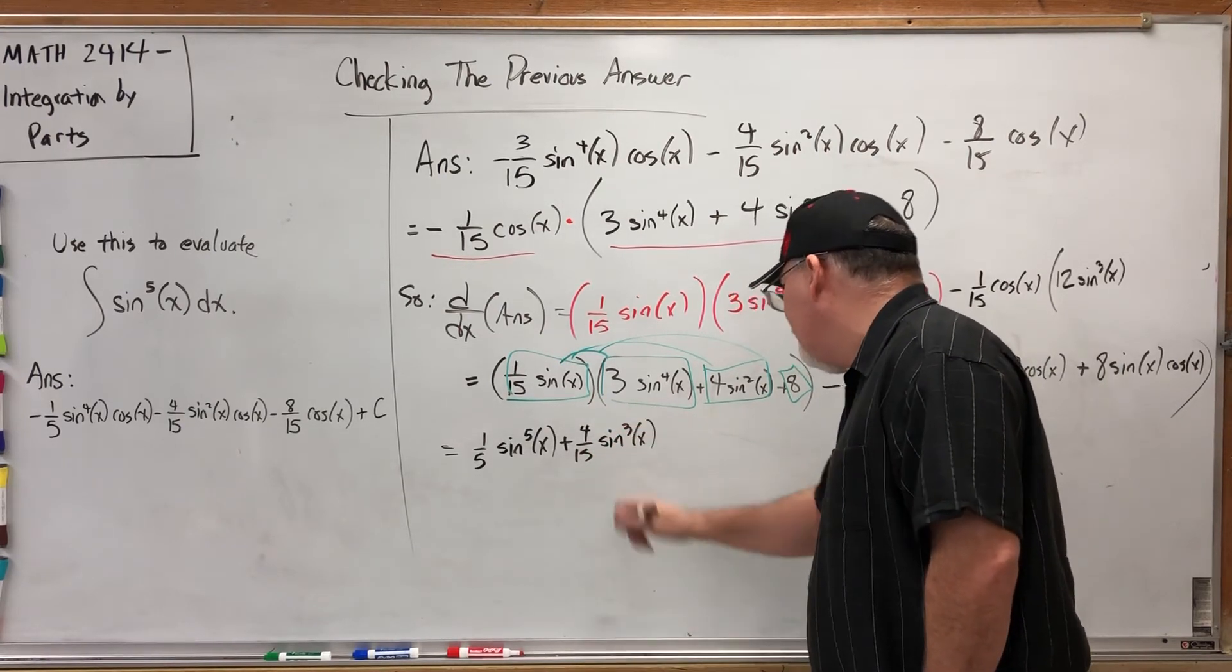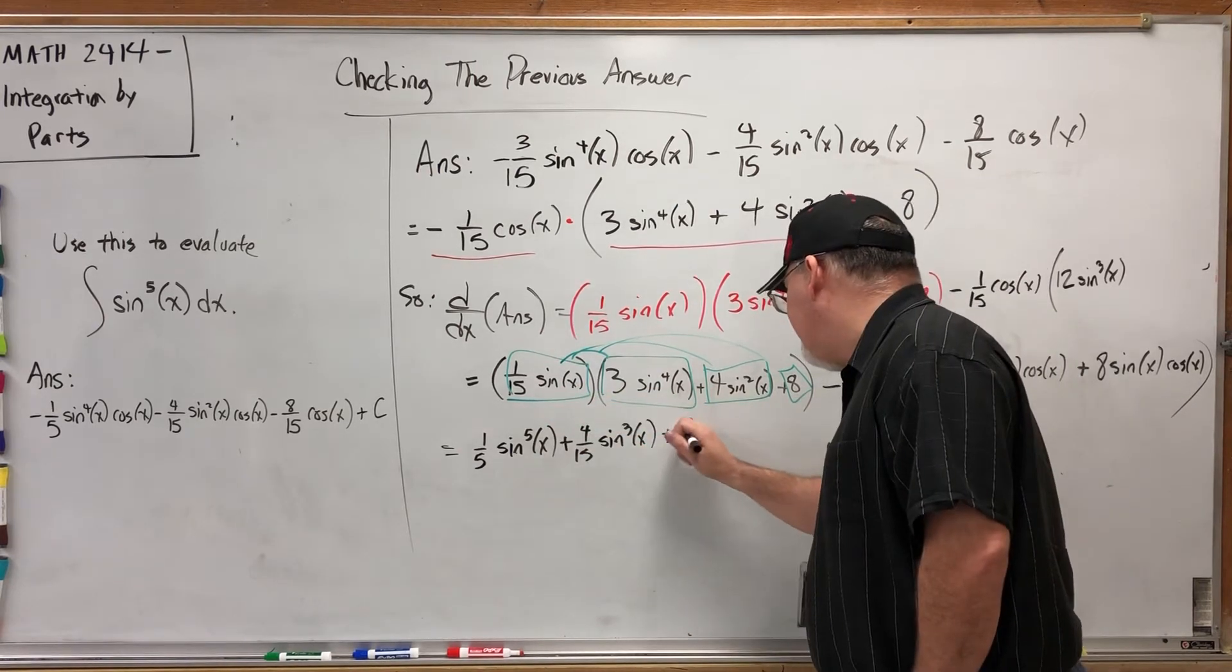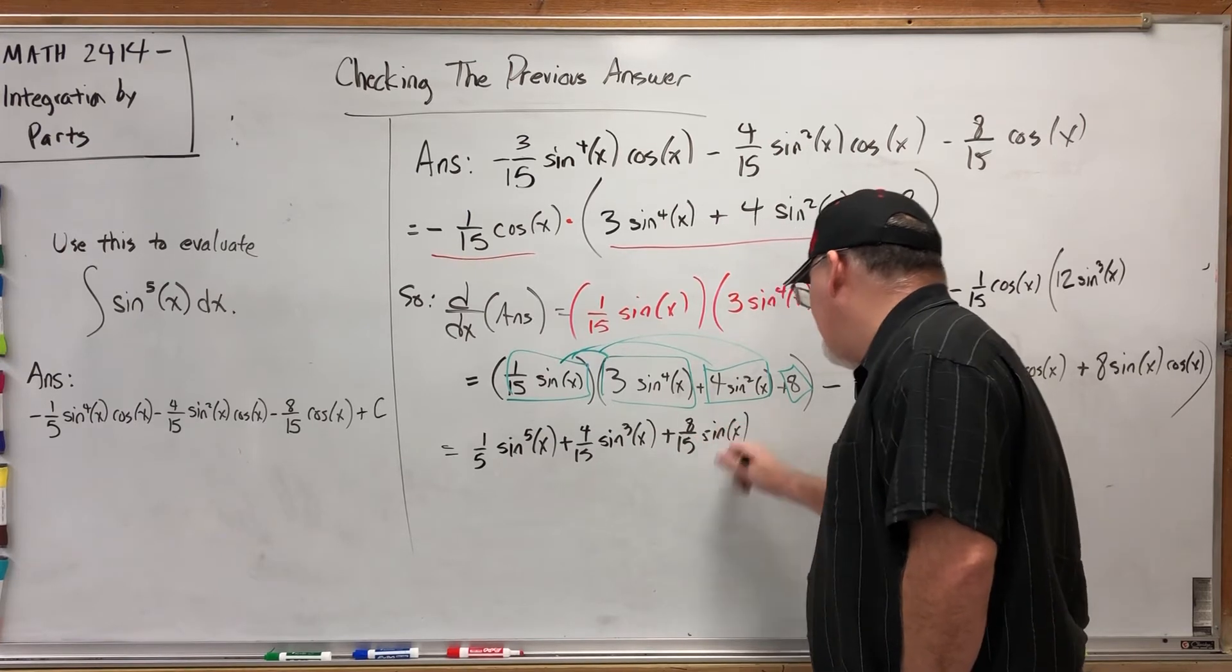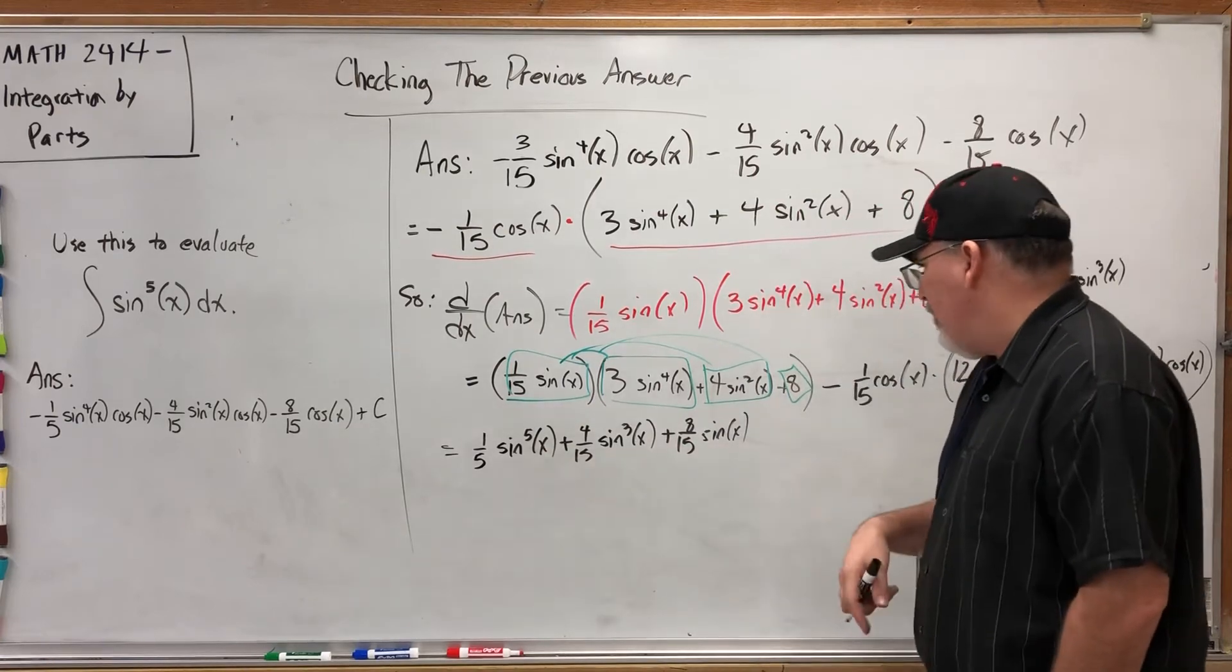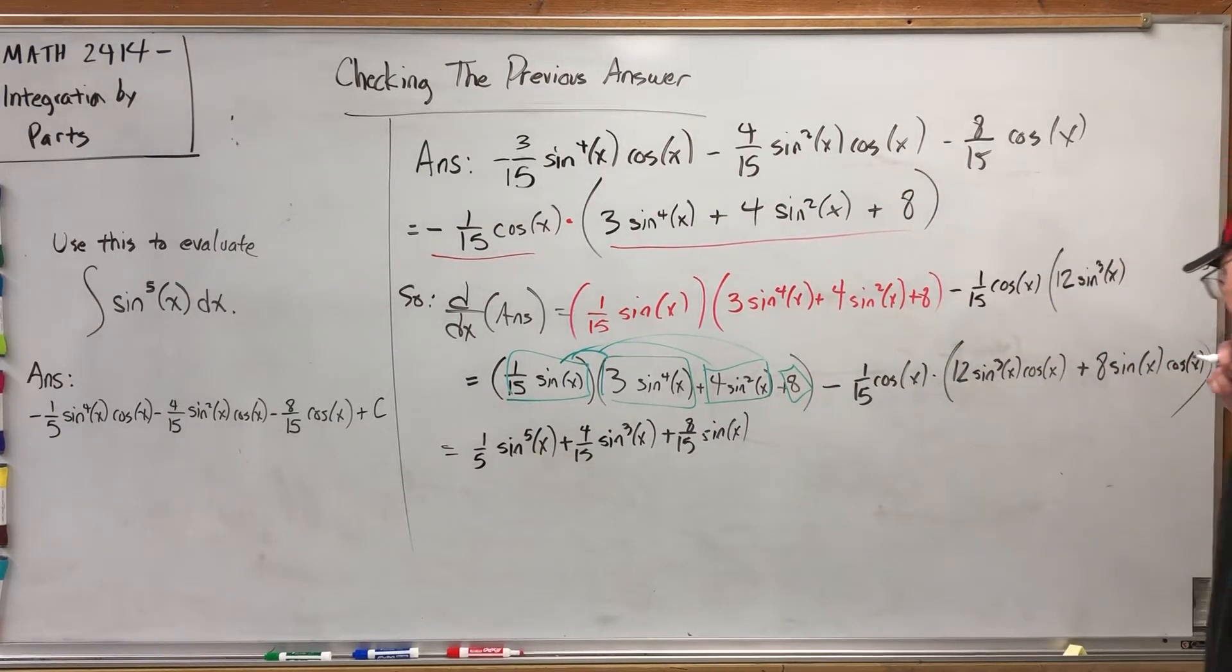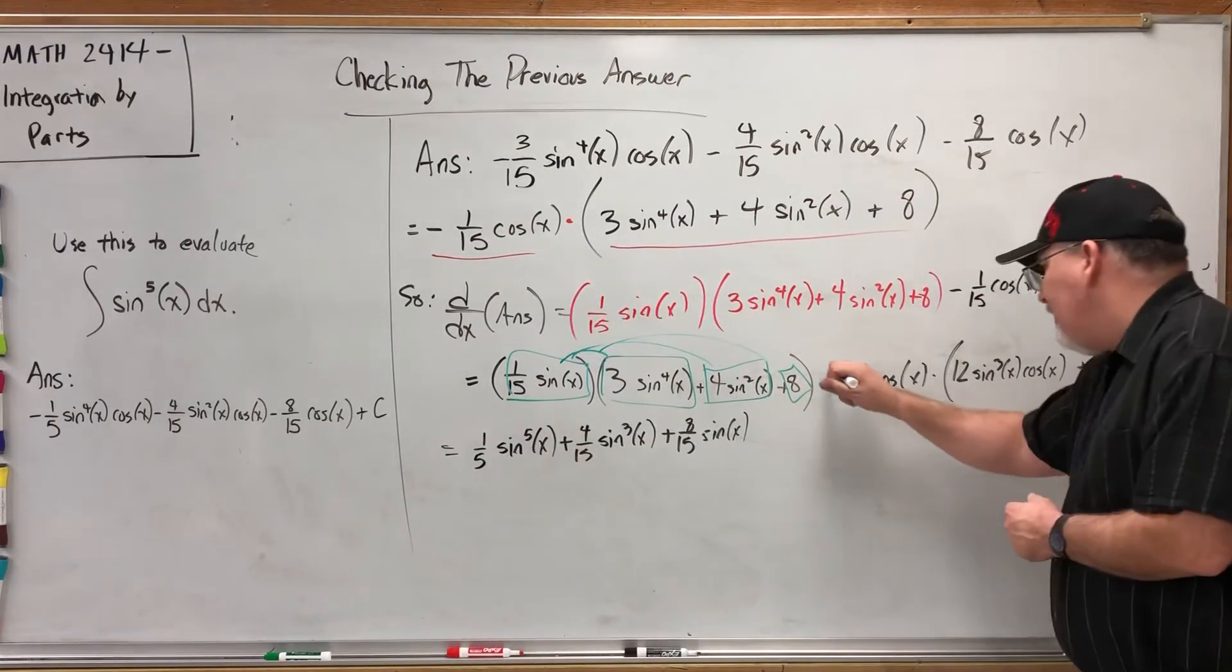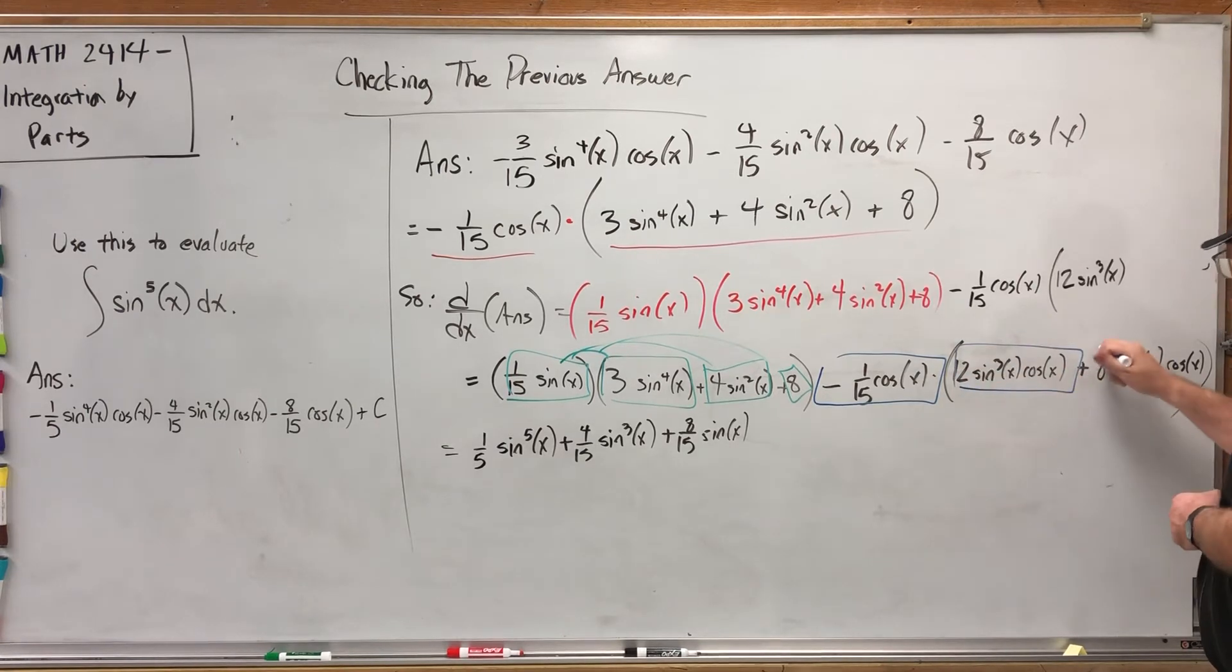And then plus eight times this is eight-fifteenths sine of X. So here's what I'm hoping will happen: eventually we'll pick up another four-fifths of these to make one of them, and stuff will show up to cancel these. All right, let's do the distribution over here, so we're distributing negative one-fifteenth cosine X to both halves of this addition problem. You might be wondering, but look at all those cosines mucking things up.